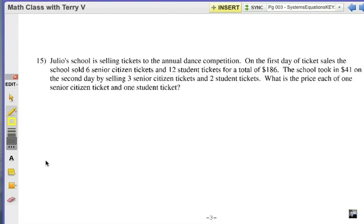Julio's school is selling tickets to the annual dance competition. On the first day of ticket sales, the school sold six senior citizen tickets and twelve student tickets for a total of $186. The school took in $41 on the second day by selling three senior citizen tickets and two student tickets. What's the price each of one senior citizen ticket and one student ticket?